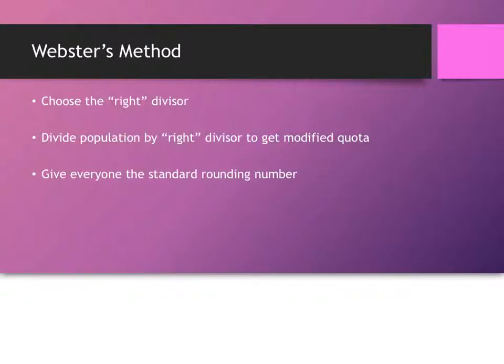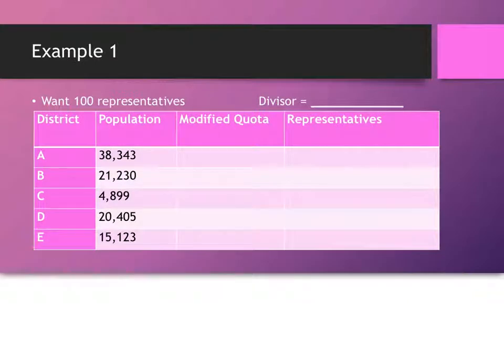And because the number that you're dividing by is closer to the standard divisor, even though you can have quota violations, it's less likely in Webster's method. It's the least likely of all the methods which have different divisors.